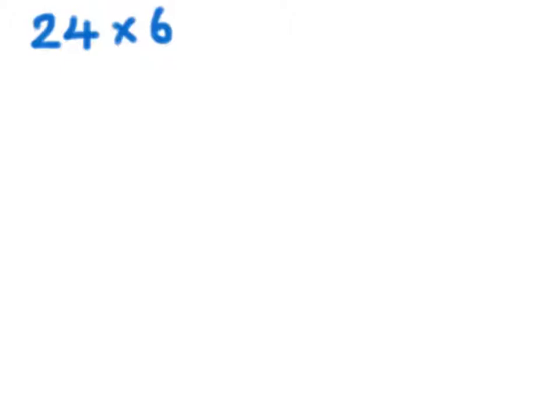And you can partition the bigger number, 24, into 20 and 4 and then multiply those by 6 and then add the totals together. So, 24 partitioned would be 20 times 6 and 4 times 6.